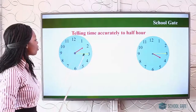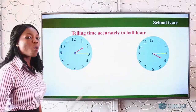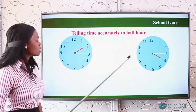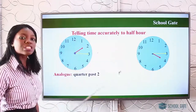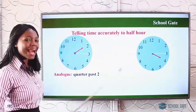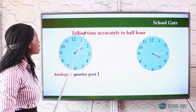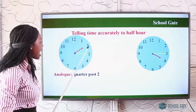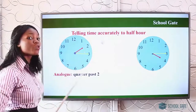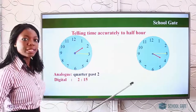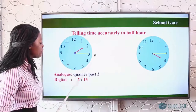Now see this: the long hand is on three and the short hand is on two. We said when the long hand is on three it is read as quarter past or quarter after. So with the short hand on two, it is read as quarter after two, or quarter past two — that is in analog. In digital, you count from here: five, ten, fifteen. So the long hand is at fifteen and the short hand is on two, and you write it as two fifteen.